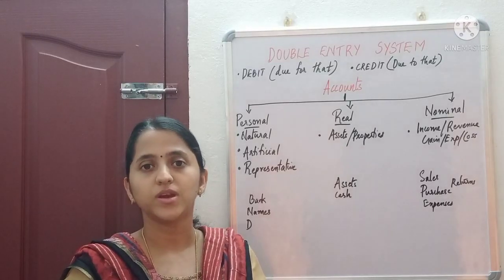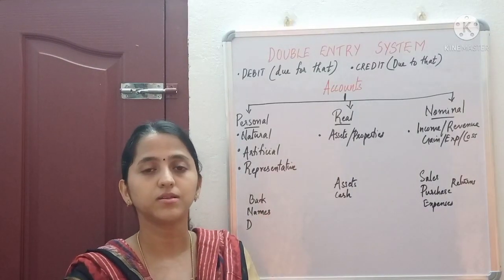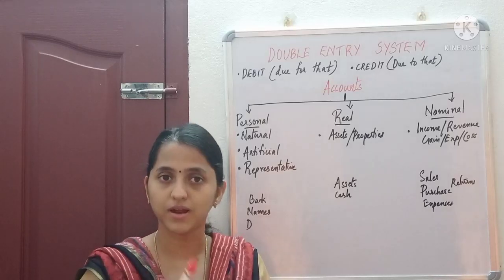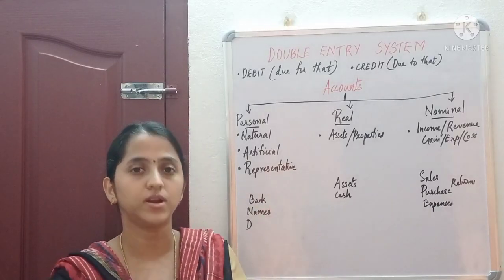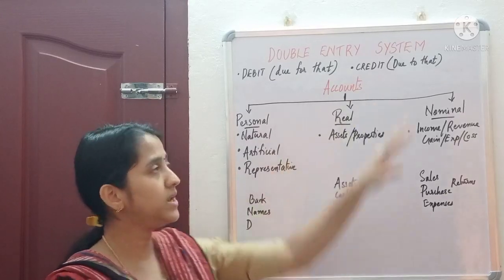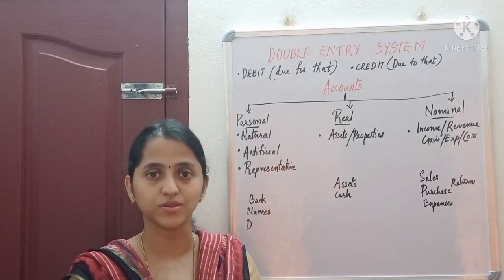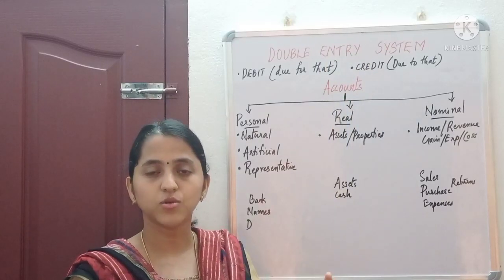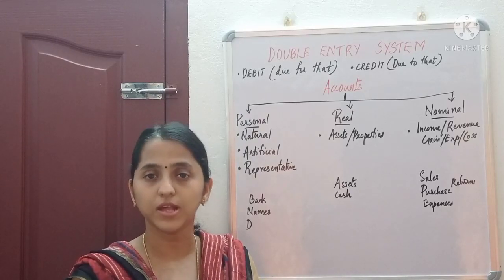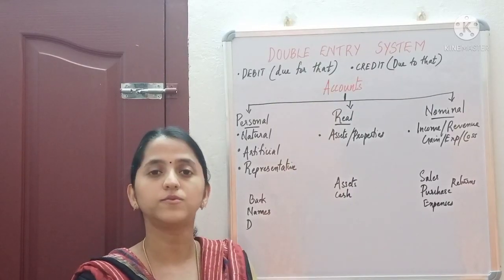Good morning. In this video, let us discuss what is the double entry system. We are moving on to the basics of accounting concepts, how to record transactions in the accounting books. We have to know different types of accounts and the rules of debit and credit. Double entry means every transaction we record in the books has two aspects: one is the giving aspect and one is the receiving aspect.